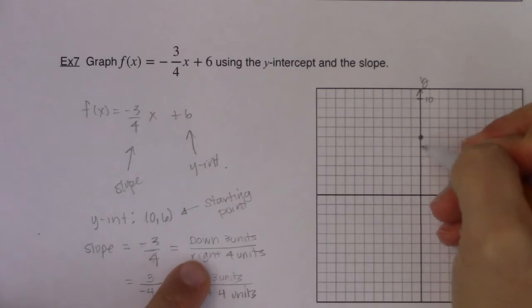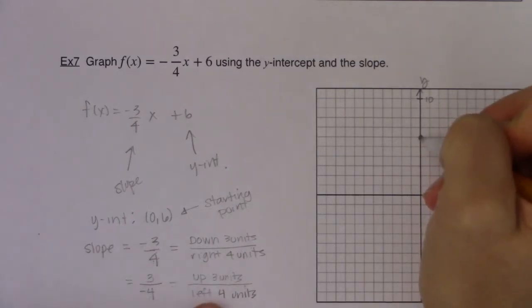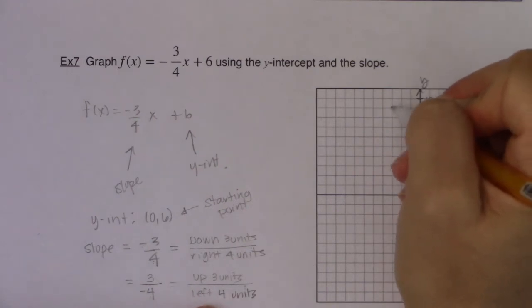Let's try this first one. I'm going to go down three units. So one, two, three, and then I'm going to go right four. One, two, three, four. There's my three units. And then left four units. One, two, three, four.